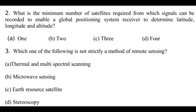Question 3: Which one of the following is not strictly a method of remote sensing? Option A: thermal and multispectral scanning; Option B: microwave sensing; Option C: earth resource satellite; Option D: stereoscopy. As discussed earlier, stereoscopy is not a method of remote sensing — it is the 3D effect of photography.